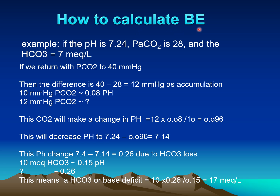The second way to calculate base excess or deficit is when pH and CO2 are both abnormal. In this case, we first correct carbon dioxide back to 40 mmHg. In this example, CO2 increases from 28 to 40 — a rise of 12 mmHg. Using the rule that a 10 mmHg change in CO2 causes a 0.08 change in pH, a 12 mmHg change produces a pH change of 0.096.